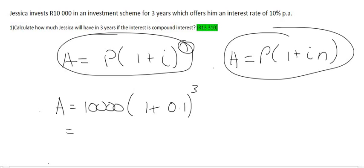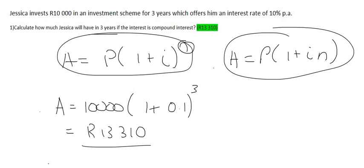Go ahead, type this in on the calculator and what you'll find is you'll get an answer of thirteen thousand three hundred and ten Rand. And so you can do it using a simple formula instead of having to do it year by year by year. So this is the new compound formula that we'll use and if it's a simple interest question you can use that formula over there.